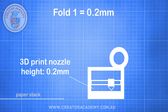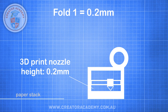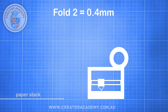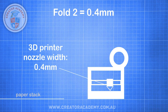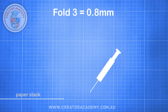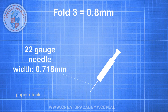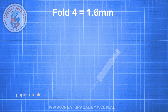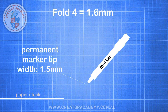On our first fold, we are doubling the thickness of our 0.1 millimetre thick piece of paper to become 0.2 millimetres thick, or about the same height as the print nozzle of a 3D printer. On the second fold, we are at 0.4 millimetres thick, which is about the width of the 3D extruder nozzle. Fold 3 takes us to 0.8 millimetres, which is about the thickness of a vaccination needle, and fold 4 makes our stack barely thicker than the nib of a felt tip pen.